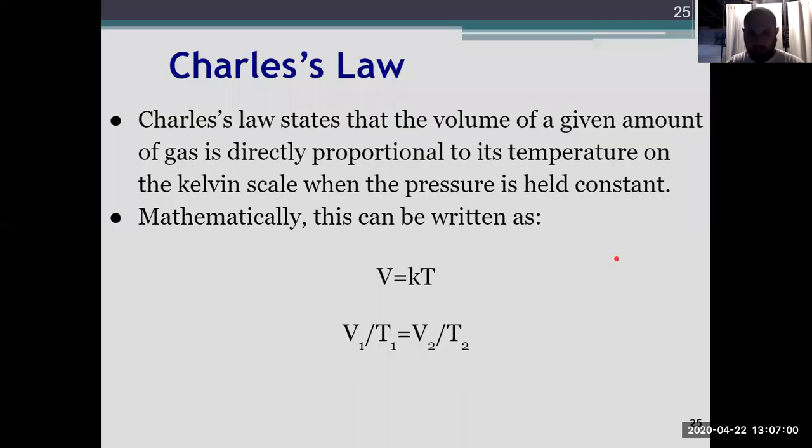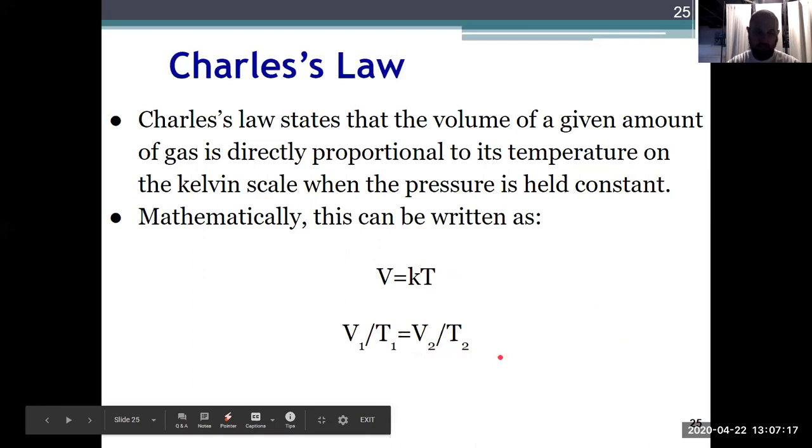So I can relate Charles's law: V equals KT, just like Amonton was P equals KT. Now Charles's law is V equals KT, shows me that volume is directly proportional to temperature, provided the pressure and the amount are remaining constant. The modified version, like we just talked about, to solve for an initial or a final state: V1 over T1 equals V2 over T2.